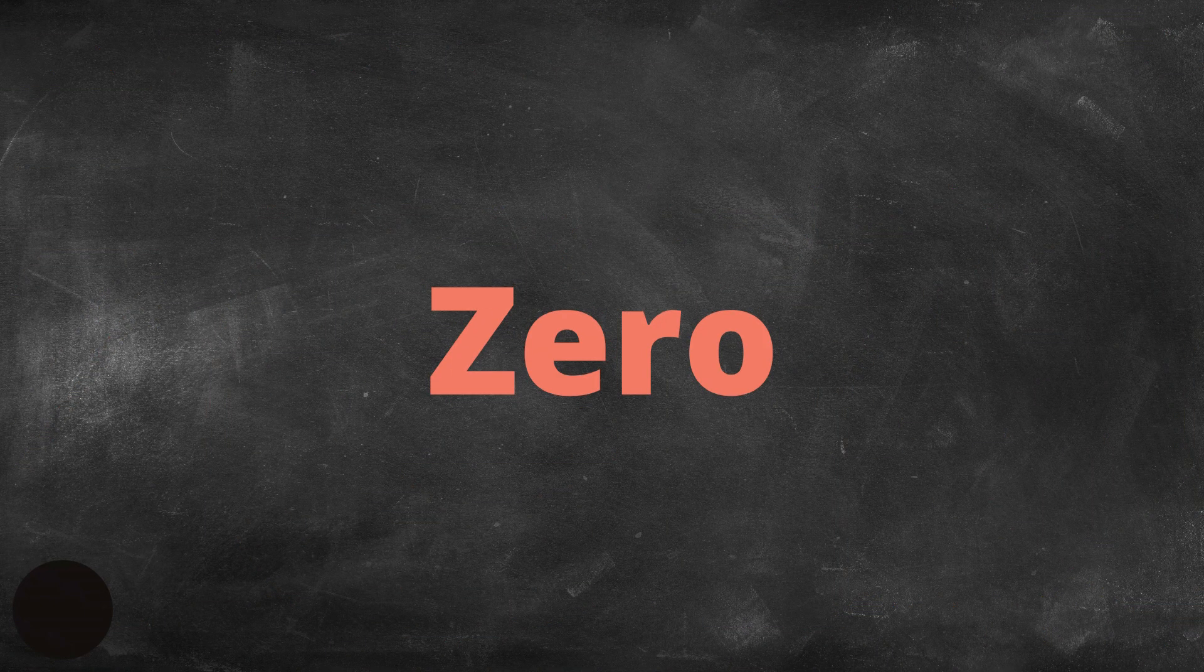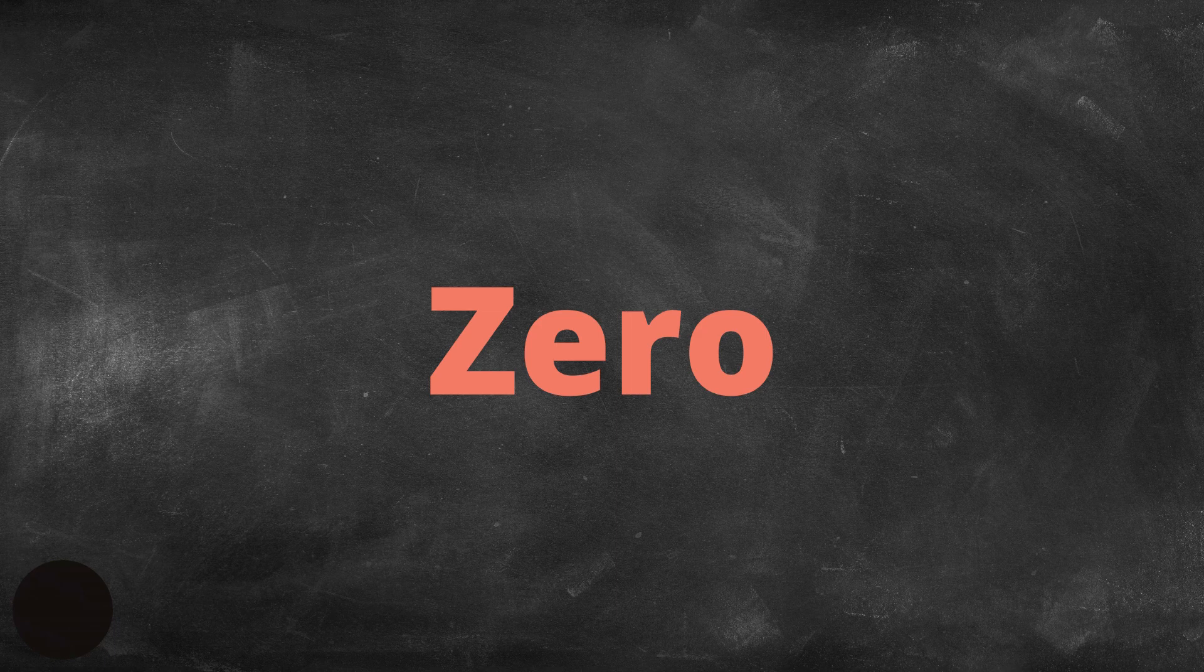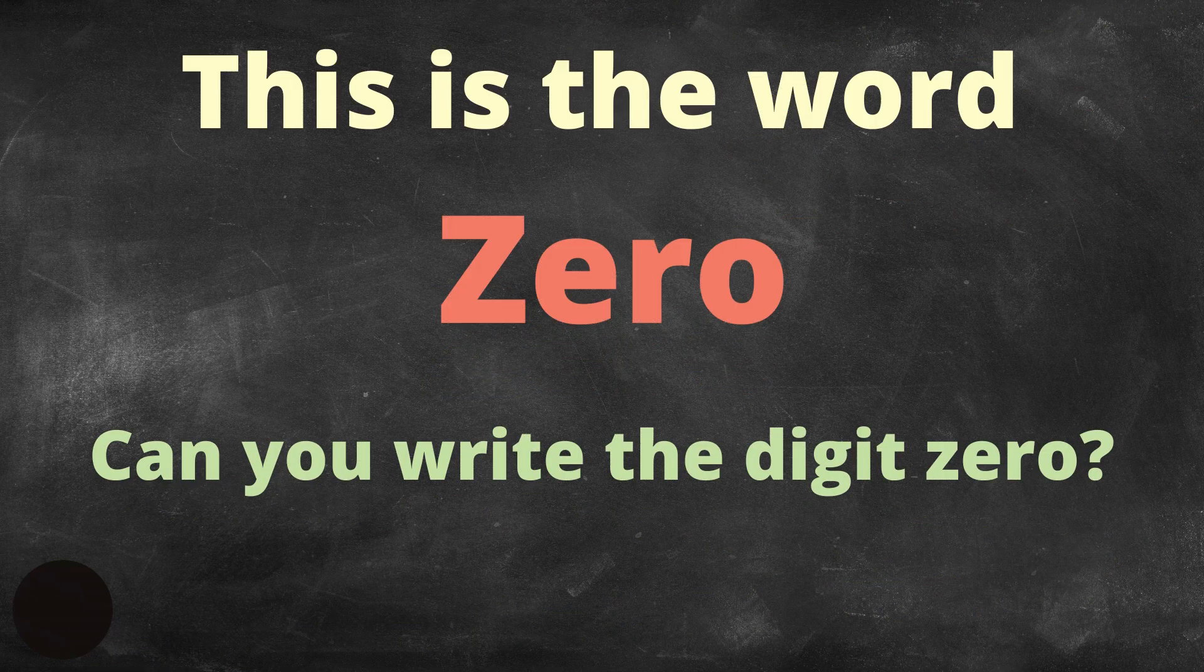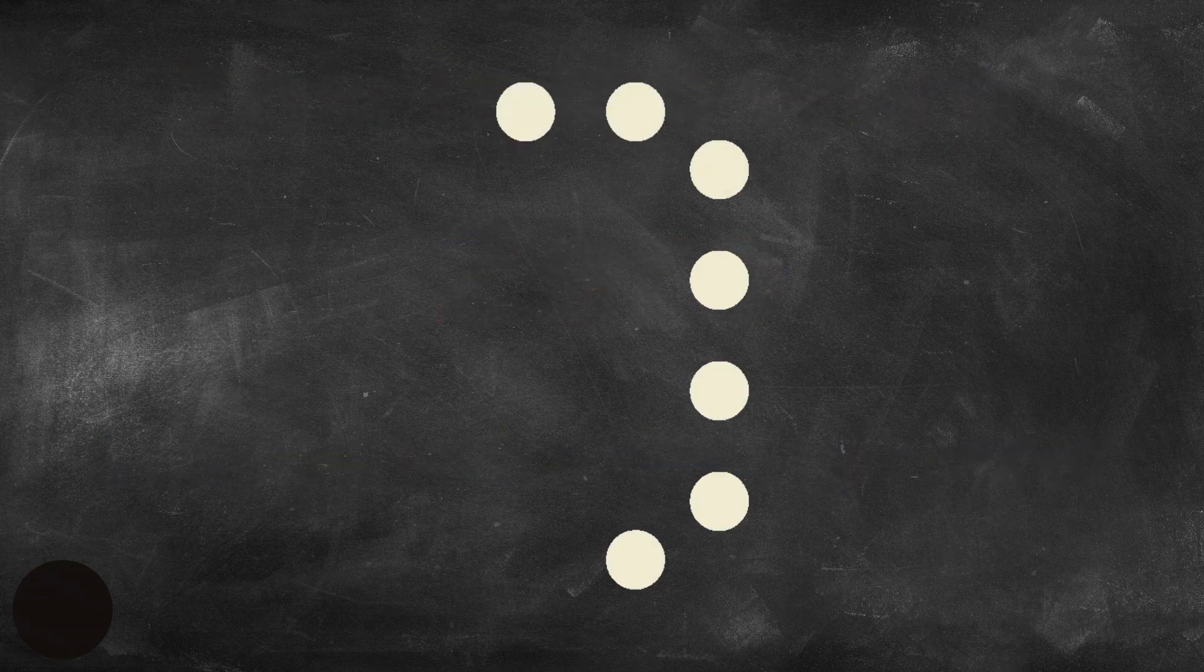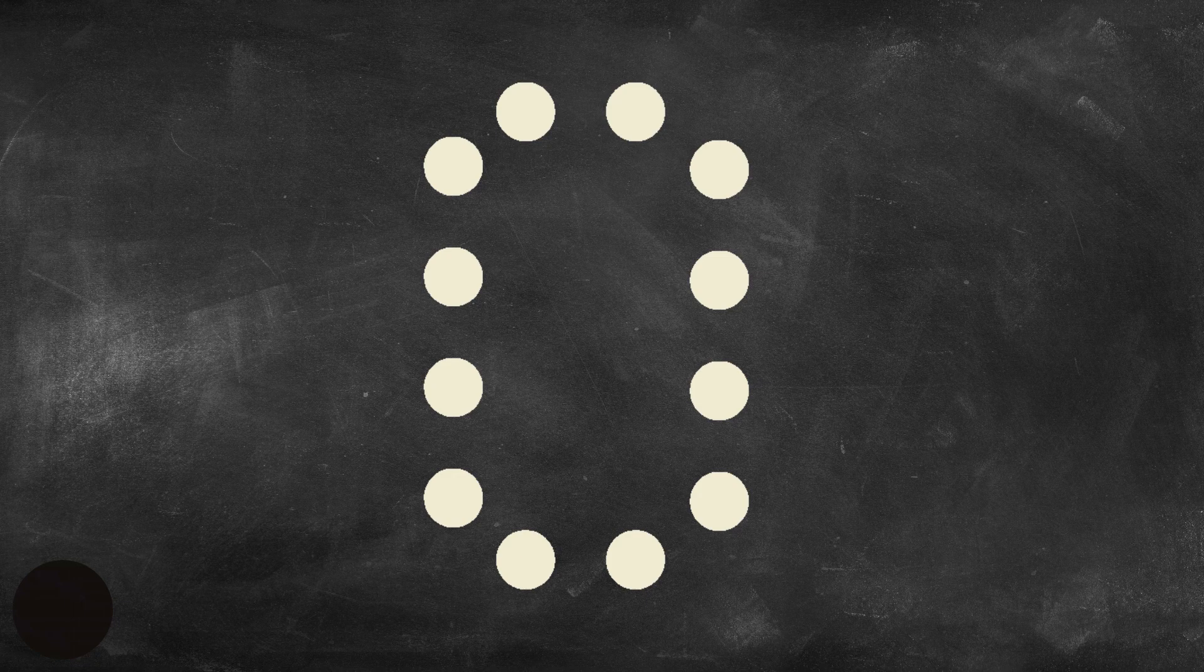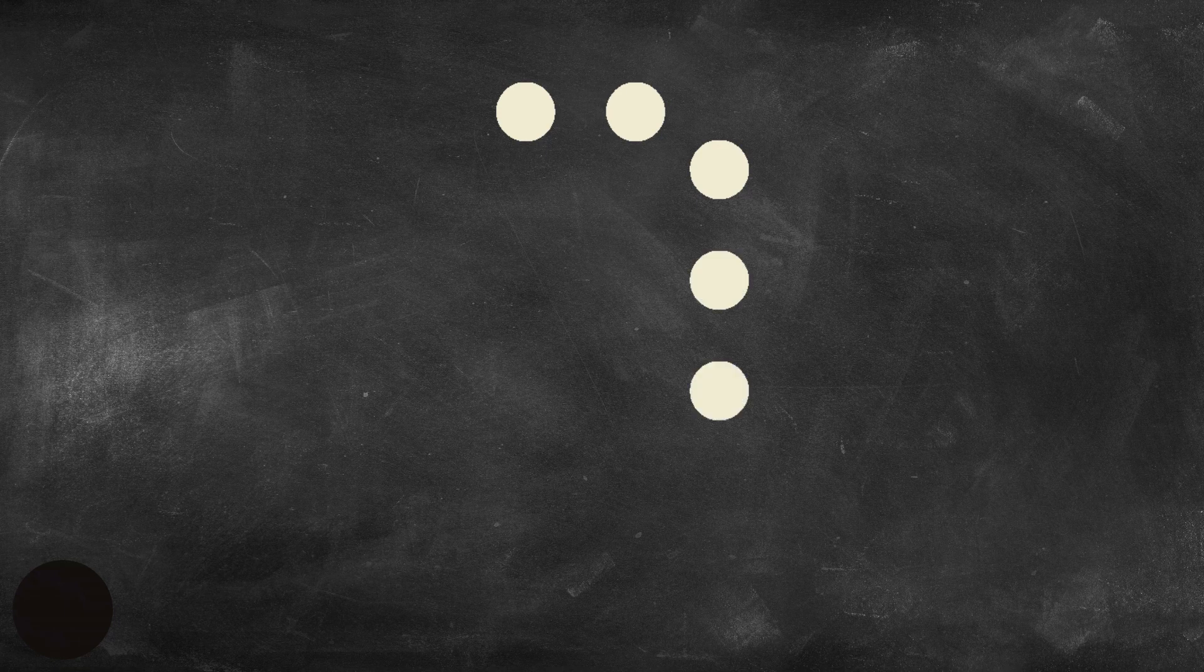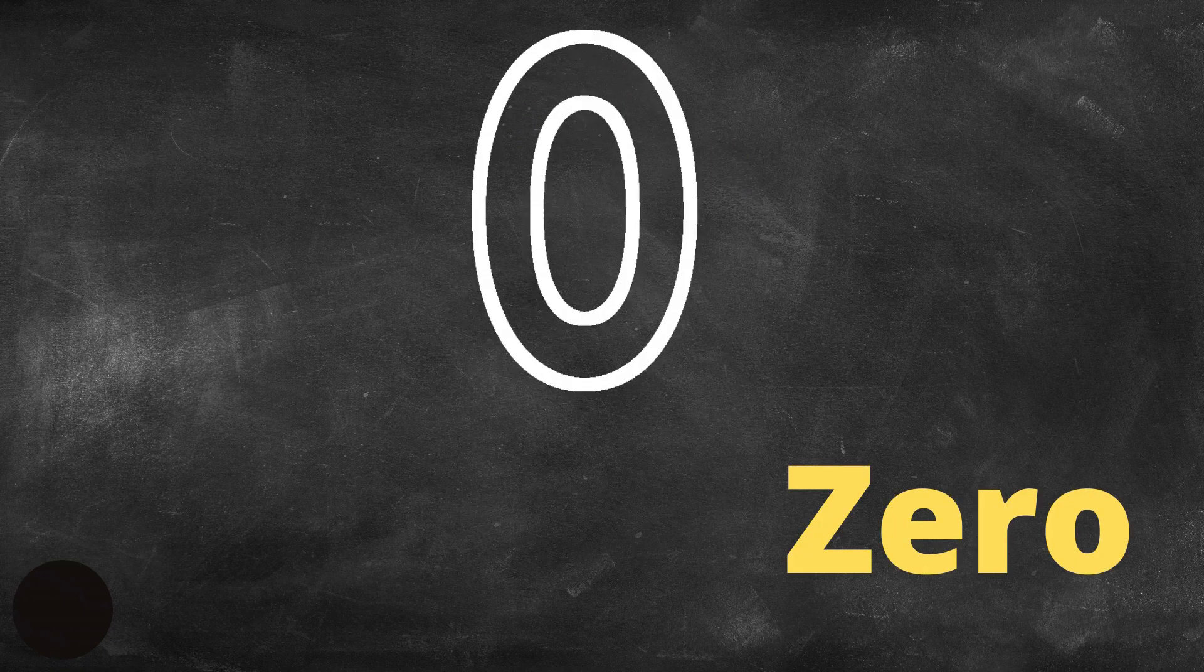This is how you write the word zero. Can you write the digit zero? Zero. Remember, zero looks like an O, but it is different. O is a letter, zero is a number.